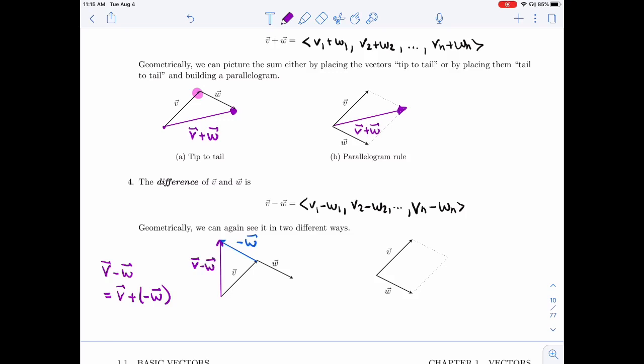All right, so you can do tip to tail with V and minus W. Now, if we go back to a parallelogram, that purple arrow would fit nicely over here. And so this is V minus W.